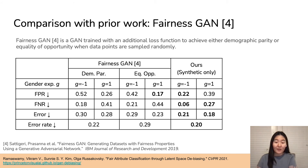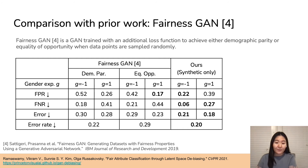Next, we compare our augmentation method to recent prior work. The first is FairnessGAN, a GAN trained with an additional loss function to achieve demographic parity or equality of opportunity when data points are sampled randomly. The FairnessGAN authors train a classifier for the attractive attribute on just the generated data and measure gender bias with false positive rate, false negative rate, and error rate. We also train a classifier for the attractive attribute on just our balanced synthetic data and find that ours performs better on most metrics, while using only a single GAN for all attribute pairs — in contrast to FairnessGAN, which requires training a new GAN for each target and protected attribute pair.